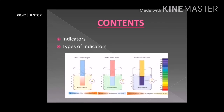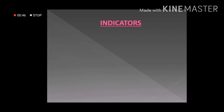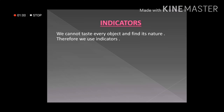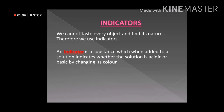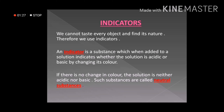We will study the types of indicators in detail. We discussed in the previous class that we should not touch or taste chemicals, so how do we come to know that a given substance is an acid or a base? This is why we use indicators. An indicator is a substance which, when added to a solution, indicates whether the solution is acidic or basic by changing its color. If the color does not change after adding an indicator, the substance is neither acidic nor basic — such substances are called neutral substances.